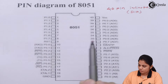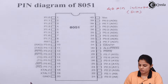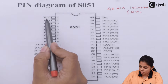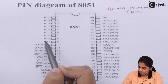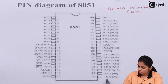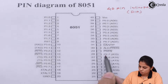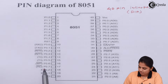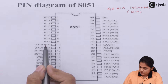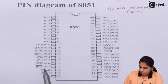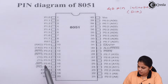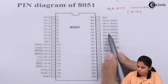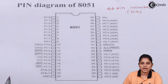We are going to see for what purpose the different pins are utilized. Here you can see P1.0 to P1.7 — this is called Port 1. Then you have P2.0 to P2.7, called Port 2. Then P3.0 to P3.7, called Port 3. And here we have P0.4, so Port 4, Port 5, and so on.